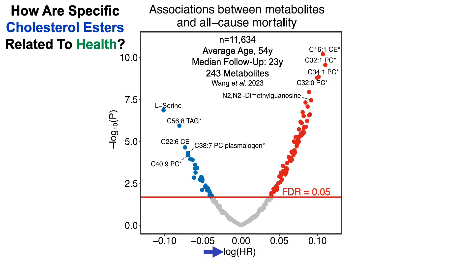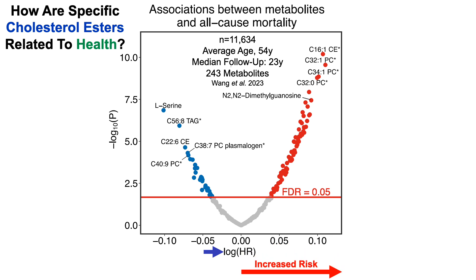All-cause mortality risk is shown on the x-axis as the log hazard ratio. To the right of zero, metabolites are associated with an increased all-cause mortality risk — higher levels mean higher risk. To the left of zero, higher levels of those metabolites are associated with a decreased all-cause mortality risk.